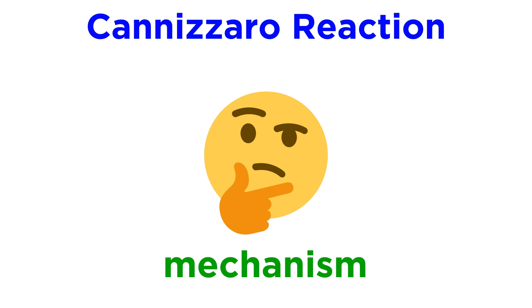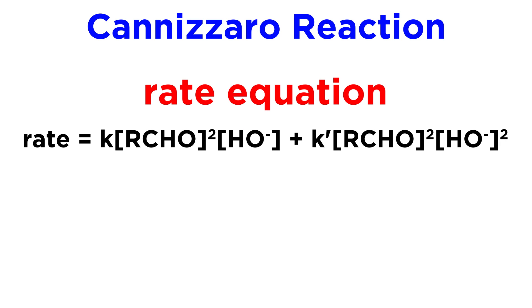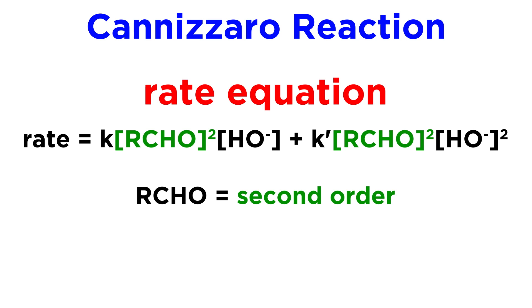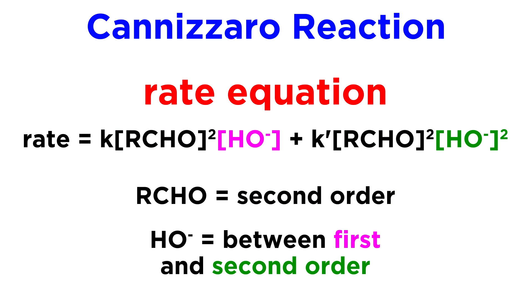The mechanism of the reaction is a bit complex. This is demonstrated by the fact that the rate equation contains two terms. The reaction is second order in aldehyde, which confirms that there are two molecules reacting with each other in the rate-determining step, but the order in hydroxide ion is somewhere between one and two, revealing a more complex role for the base.